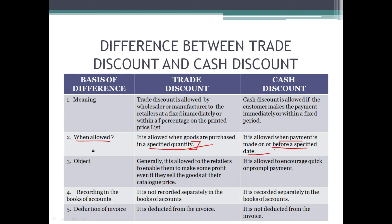इसका objective यह है — trade discount हम इसलिए देते हैं ताकि अगर retailer listed price से थोड़ा नीचे भी sell करे तो भी वो profit कमा सके। जैसे MRP 20 रुपीज की है पर retailer 19 का sell कर रहा है — इसका मतलब उसने trade discount लिया है और even if he is selling it for 19 rupees, he is making some profit. Cash discount का objective यह है ताकि promptly payment हो जाए।